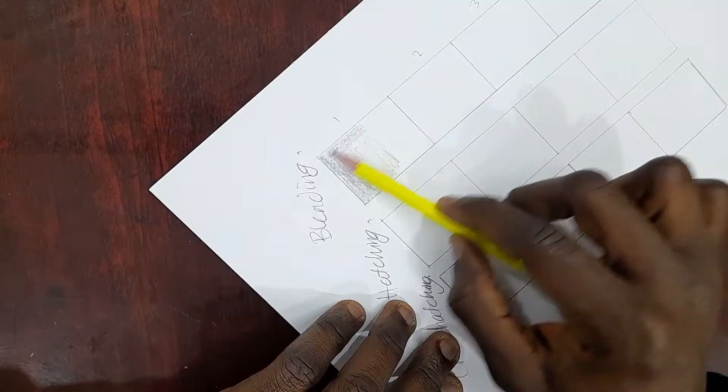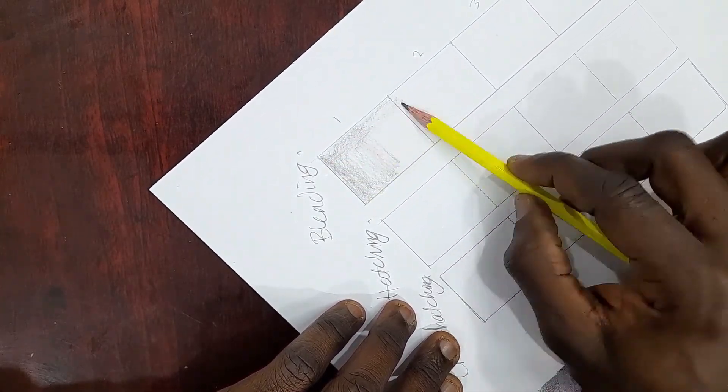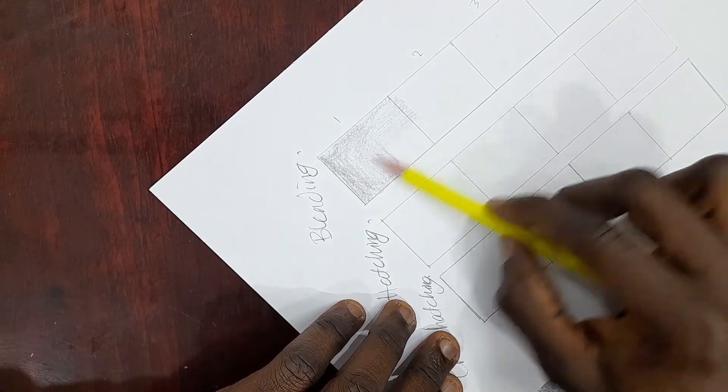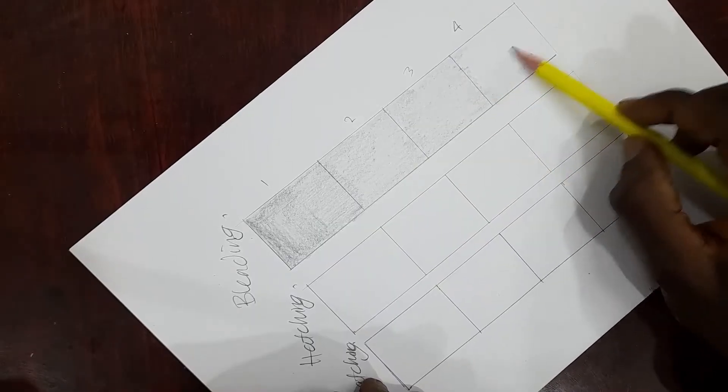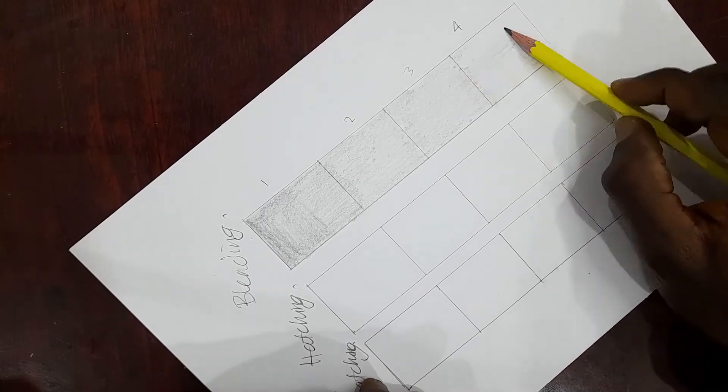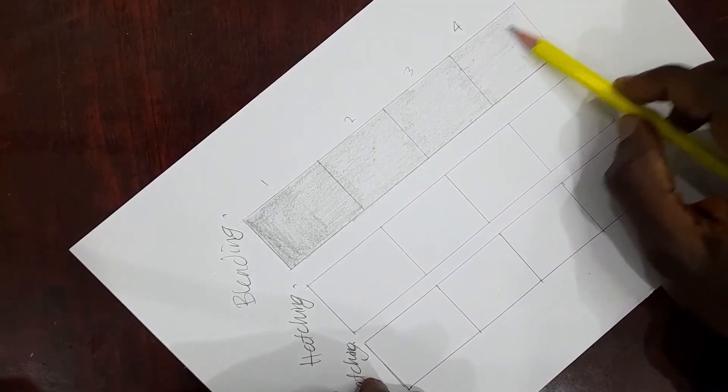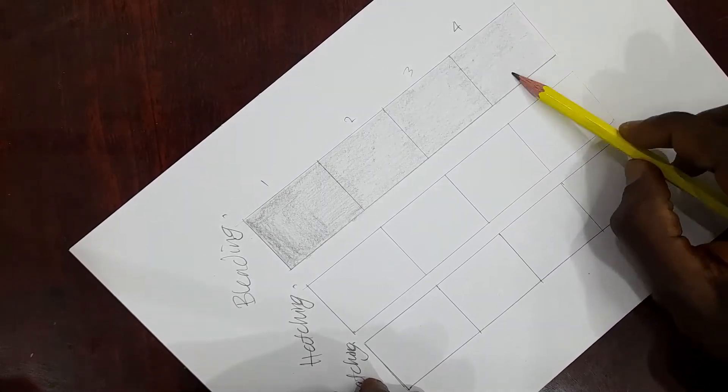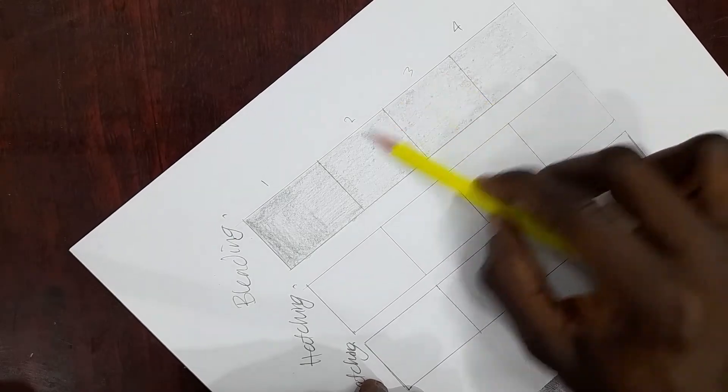Today I'll be working on the lightest tone, light tone, dark tone, and the darkest tone. So the first layer, which is my lightest tone, I will do it in the four boxes. Minimal pressure and minimal rubbing.